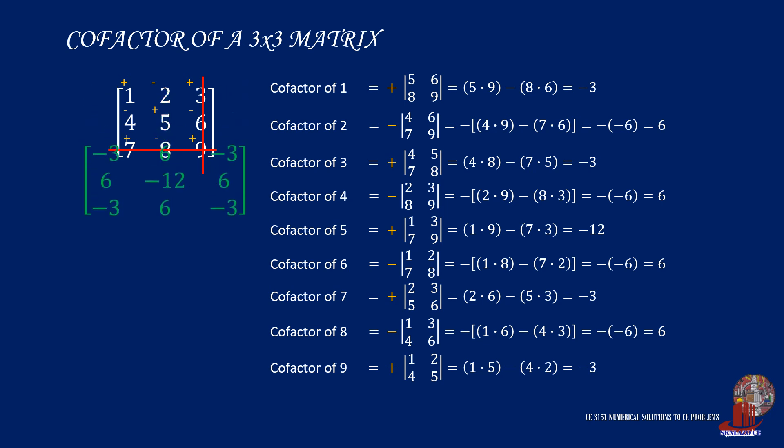Then, you can complete the cofactor matrix as negative 3, 6, and negative 3, 6, negative 12, and 6, and negative 3, 6, and negative 3.